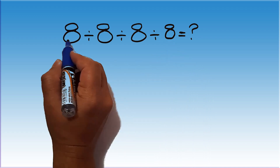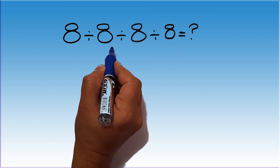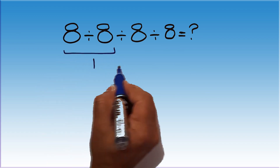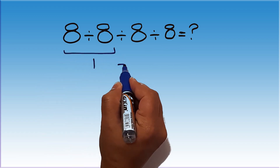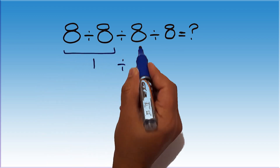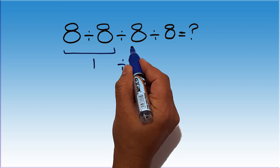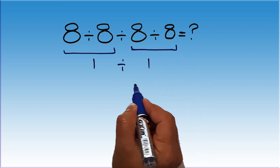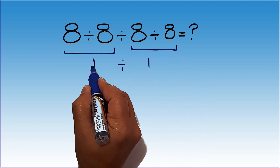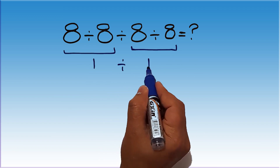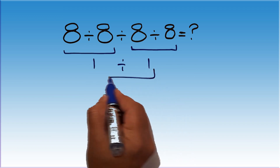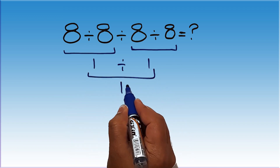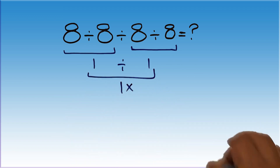8 divided by 8 gives us 1. 1 divided by... and here again we have 8 divided by 8, which equals 1. 1 divided by 1 is just 1. But this answer is not correct.